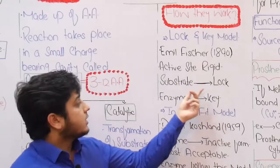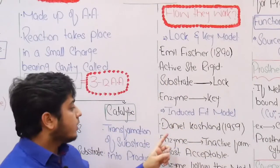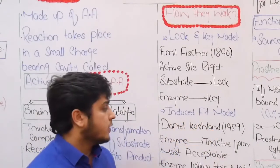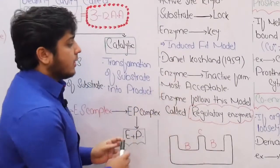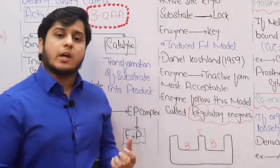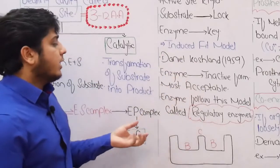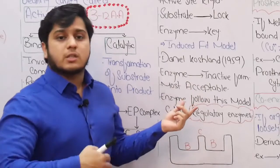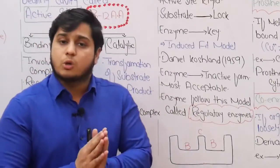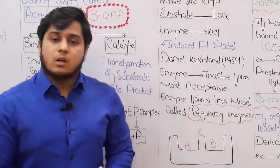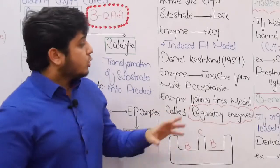In the lock and key model, the enzyme acts as a key and the substrate acts as a lock. This model was further modified by Daniel Koshland, and the new model is known as the induced fit model, proposed in 1959. In the induced fit model, the active site is flexible. When the substrate approaches, the enzyme can modify itself to accommodate the substrate. This is the most acceptable model for the proper functioning of enzyme molecules, and all enzymes follow the induced fit model.